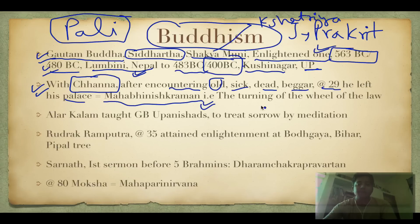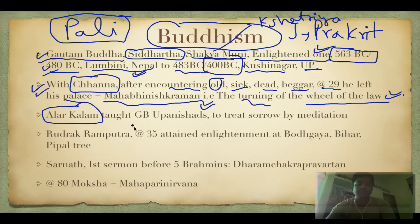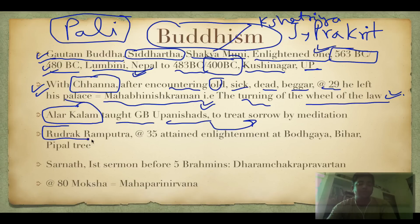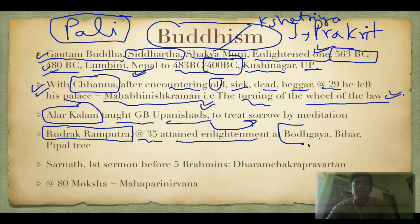This event of leaving the palace is called Mahabhinishkramana — please remember this word. Alaar Kalam was his first guru, who taught Gautam Buddha the Upanishads and how to treat sorrow through meditation. His other guru was Rudarak Ram Putra. At the age of 35 he attained enlightenment at Bodh Gaya in Bihar, under the Peepal tree.